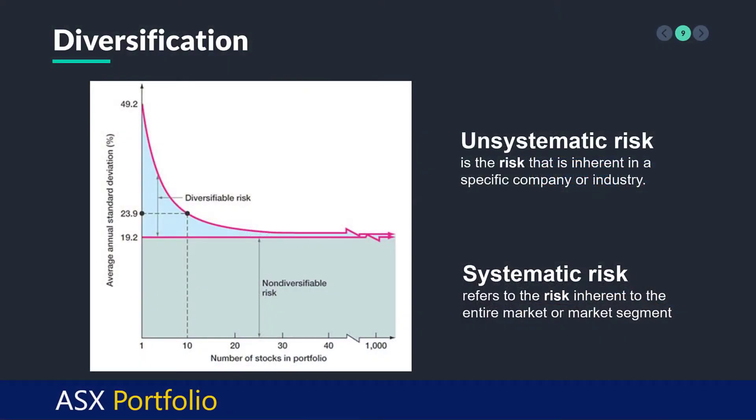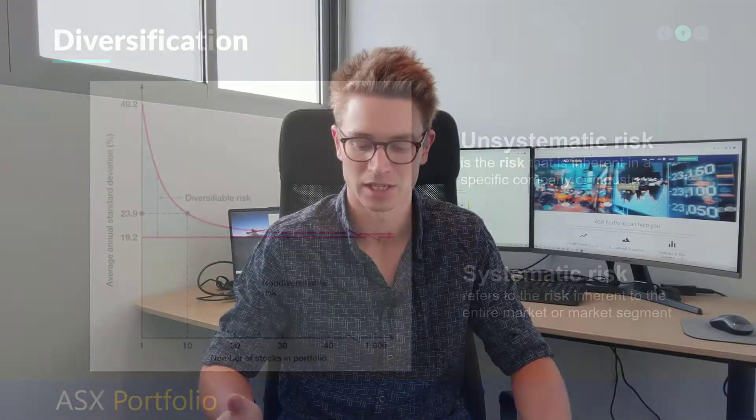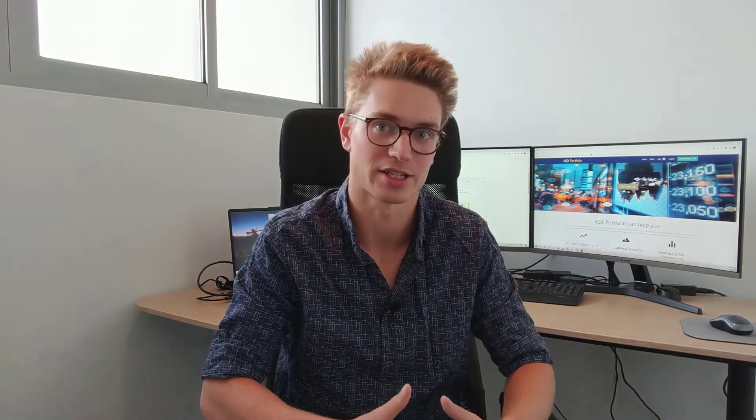Now onto diversification. There are two main components: diversifiable risk and non-diversifiable risk. Non-diversifiable risk is systematic risk — this refers to risk that is inherent to the entire market or market segment. There's nothing you can do about it. For example, with the virus, if every asset class is going down as a consequence of risk appetite and adversity to loss, then everything's going down. There's not much you can do about that.